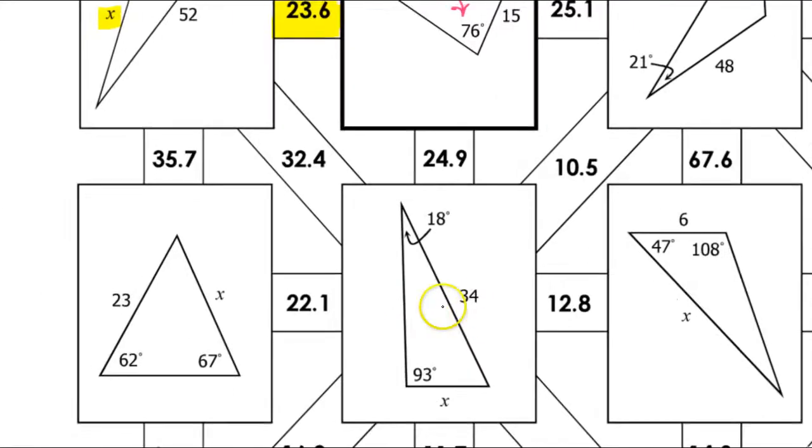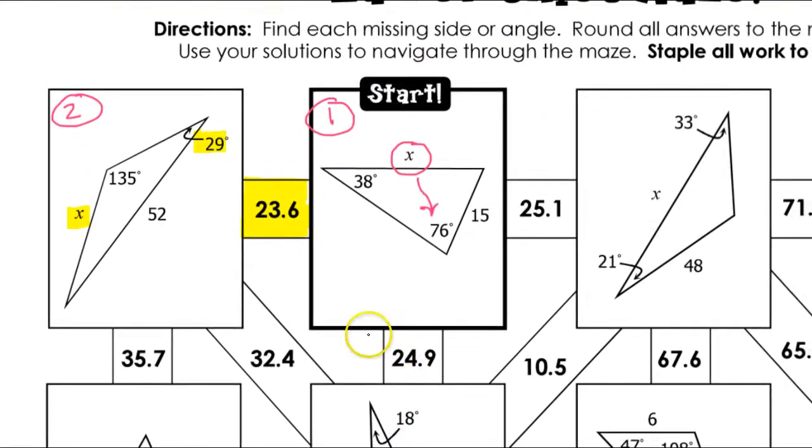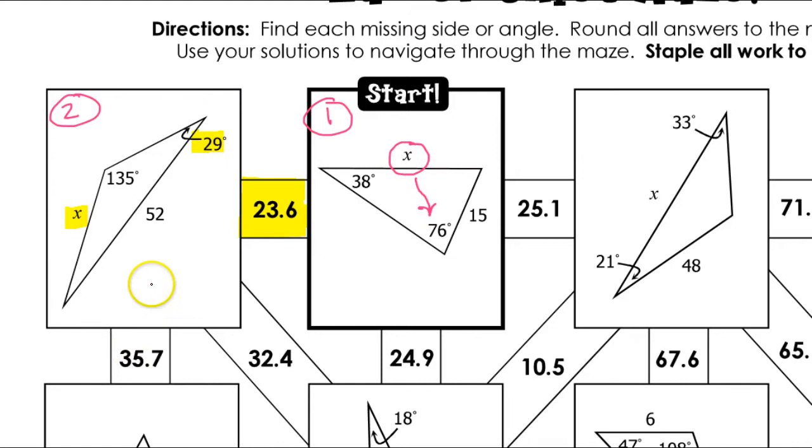So let's look at the maze and see where that leads us. Alright. 35.7 I can see is heading down. So I'm going to take my highlighter and highlight this. Alright.